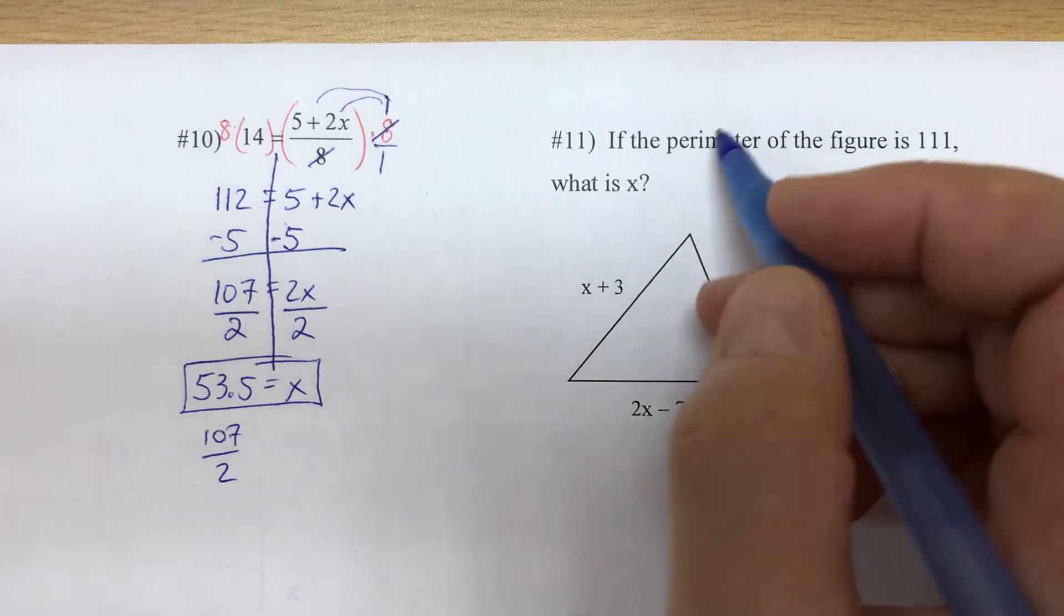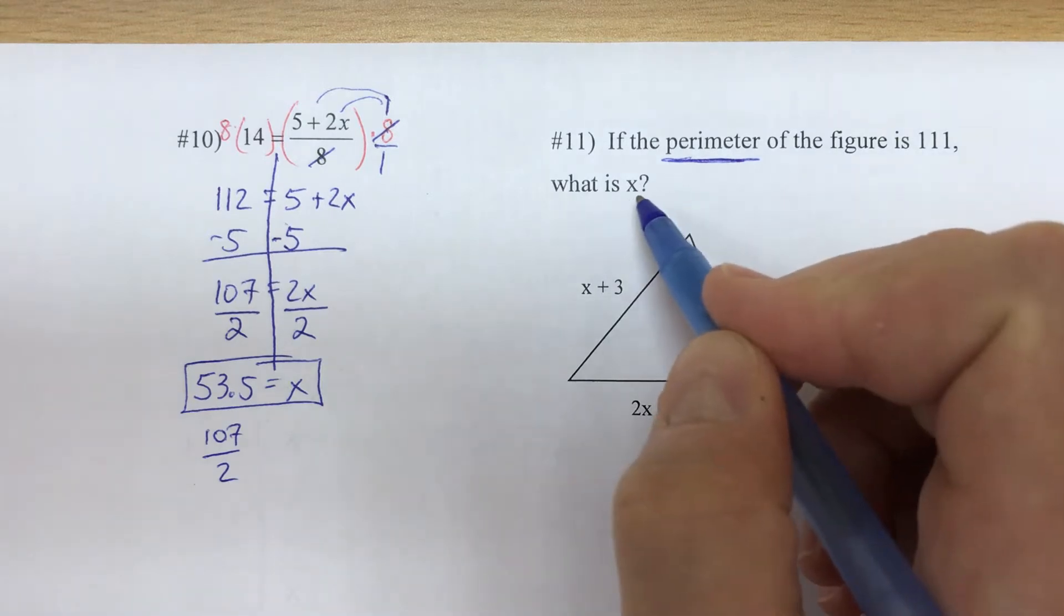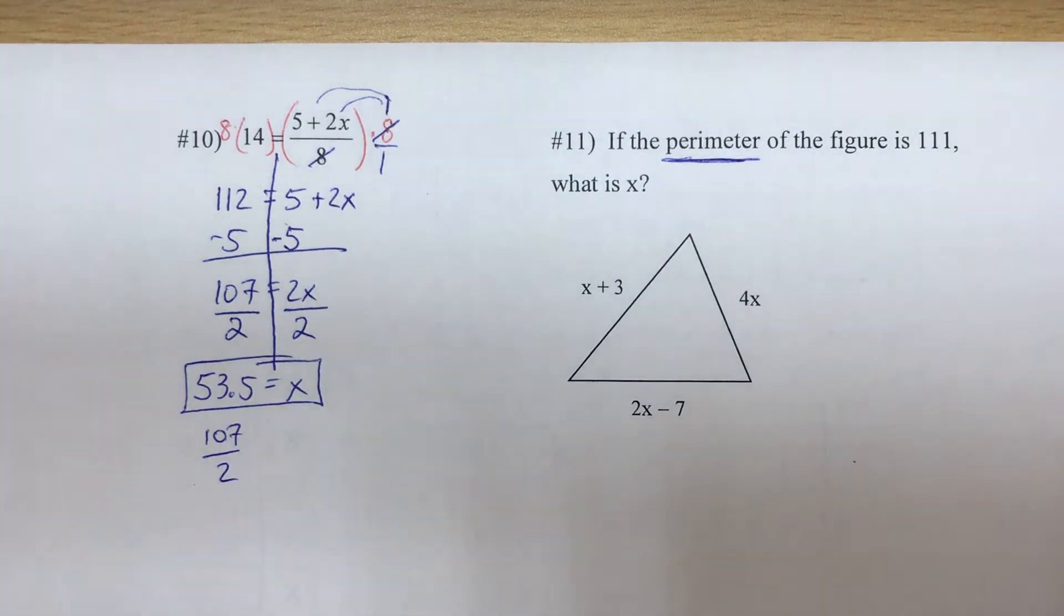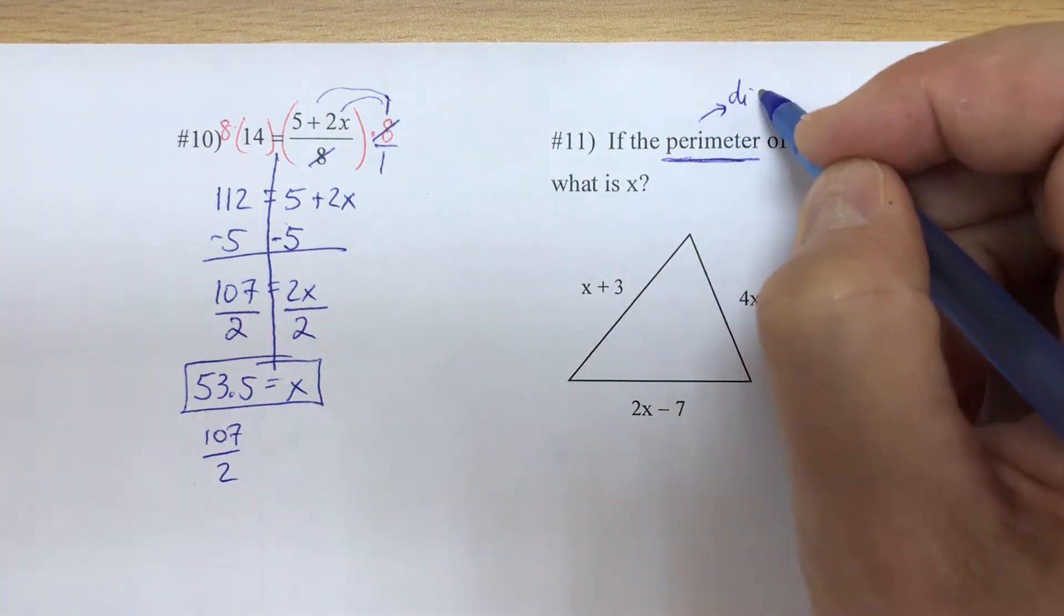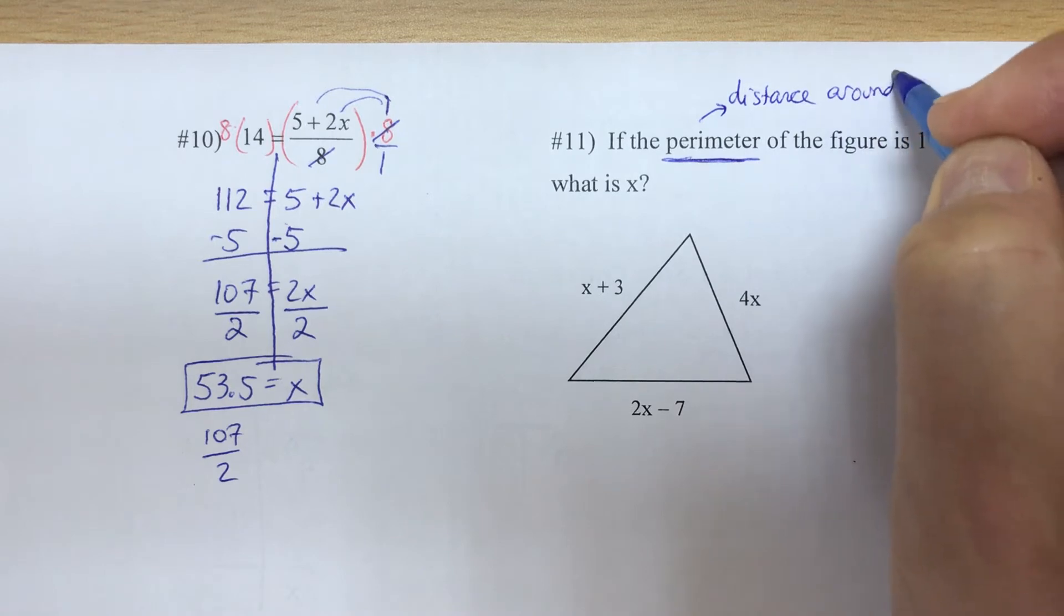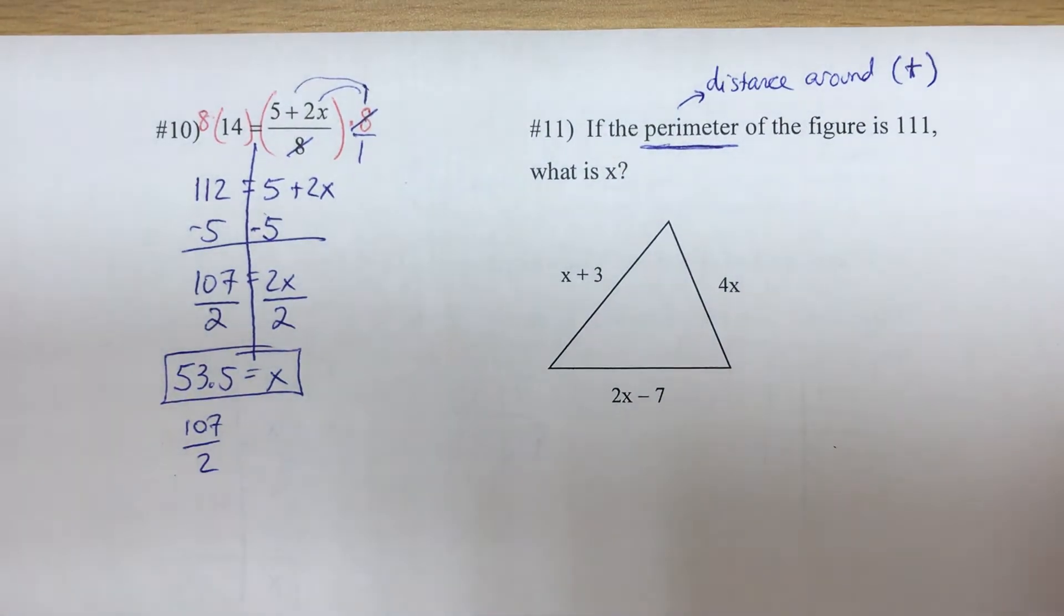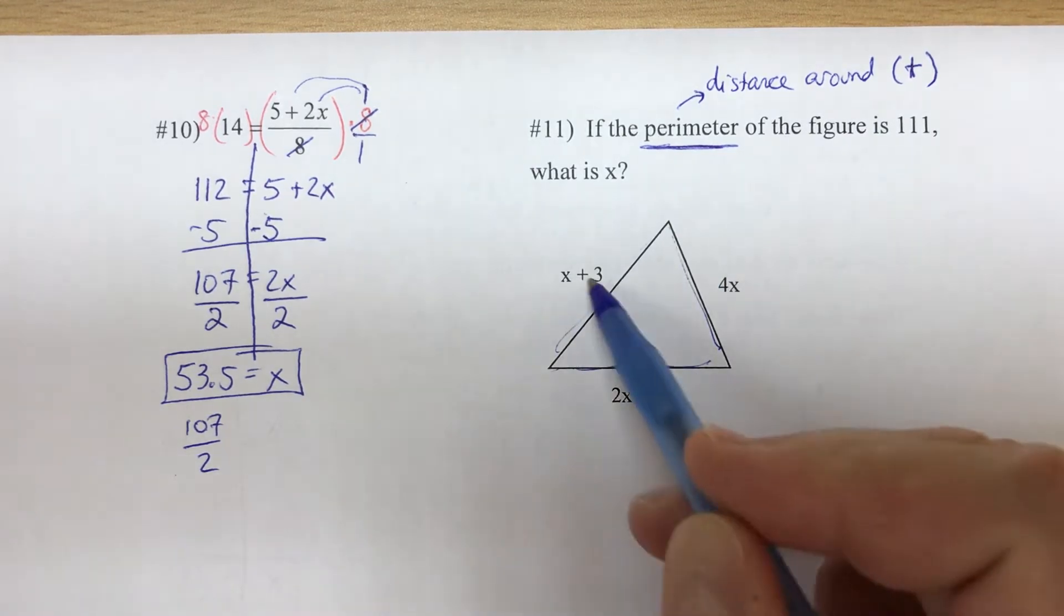Number 11: if the perimeter of the figure is 111, what is x? Now perimeter means the distance around an object, so in other words, they're telling us to add the sides. We have three sides in the triangle, so we're going to add these.